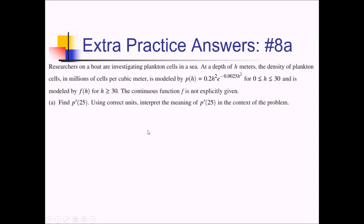For this calculator-based free response, we have research on a boat investigating plankton cells in a sea. At a depth of h meters, the density of plankton cells — in millions of cells per cubic meter — is modeled by this p of h function, valid between 0 and 30 meters. There's also a continuous function f that models what happens after 30 meters, though it's not given explicitly. Our first task is to find p prime of 25 and explain what we found.